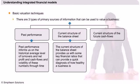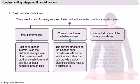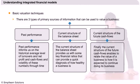The second source of information is the current structure of the company's balance sheet, which informs us of key financial ratios that can provide a quick diagnosis of the company's financial health. Finally, the current structure of the cash flows enables us to relate the value of the business to how it is expected to continue during its operations.